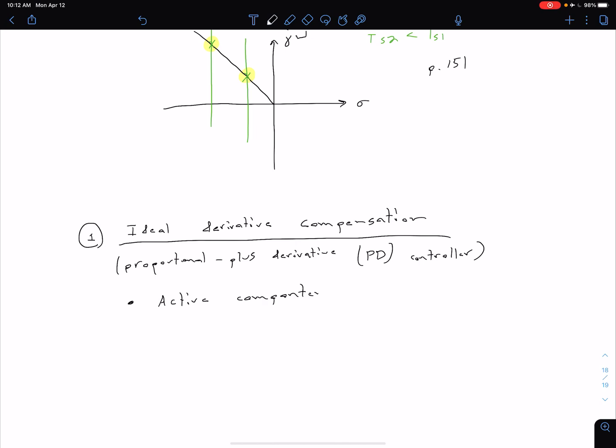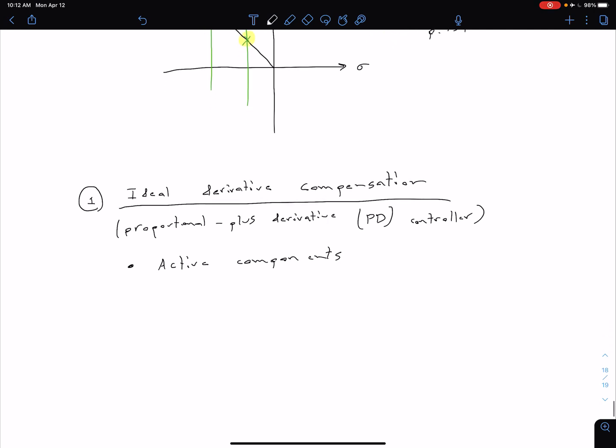Remember, there is a section in the textbook that talks about how we actually implement these compensators. In this case, our active components are our op amps. We're going to talk about in a second, as opposed to our passive components, which are just resistors, inductors, and capacitors. Active components are going to be a little bit more expensive, but typically are going to provide better performance.